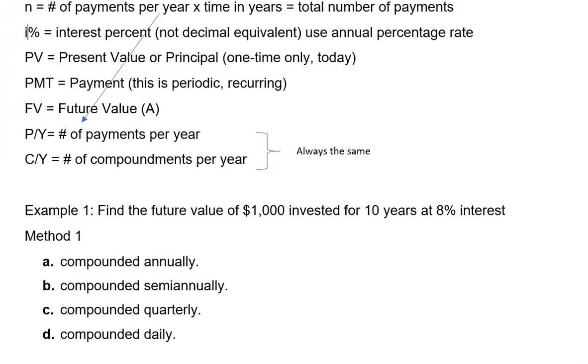The next variable on our list is the I percent or interest percent. You do not have to convert this to the decimal equivalent. You should be using an annual percentage rate here.